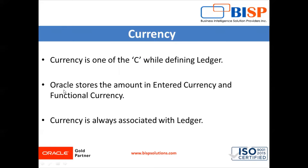For every transaction, Oracle stores the amount in entered currency. Entered currency is the currency of the transaction, and functional currency is the equivalent in the functional currency of the ledger. Currency is always associated with the ledger, whether it is a primary ledger or a secondary ledger, in Oracle Fusion application.